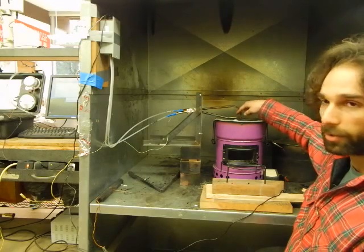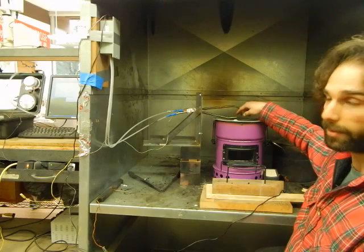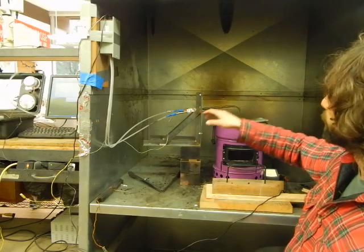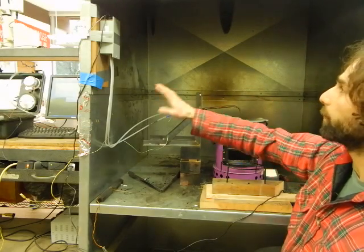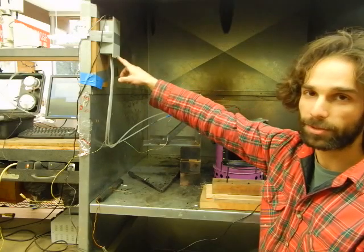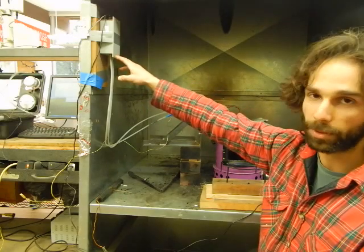We're also measuring temperature, and from that we can get the density of the fluid. There's a heat shield here, and back here we have the pressure transducer which has a range of 0 to 25 pascals.